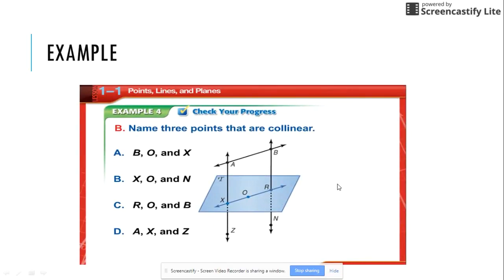Here is another example. It is asking me to name three points that are collinear. So I am looking for on the same line. B, O, and X are not on the same line. I cannot draw a straight line through them. So it is not A.